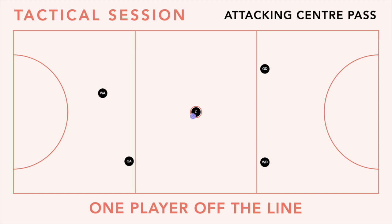On the whistle, the wing attack is going to drive to break the line and is going to receive the ball as close to it as possible. This is why we want her to start off the line — because she's got the space and the freedom. The goal attack is then going to drive to the top of the circle for the next ball, second phase.